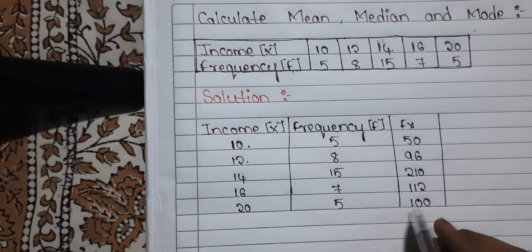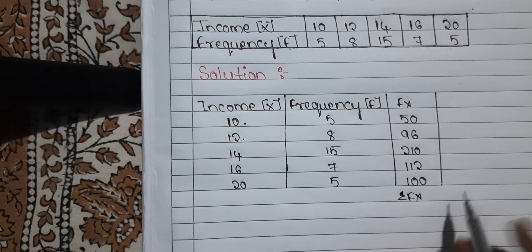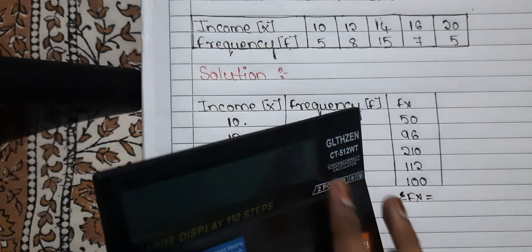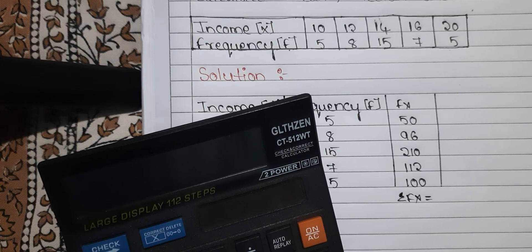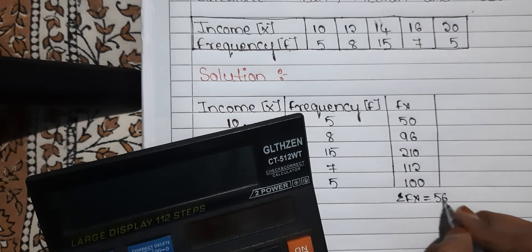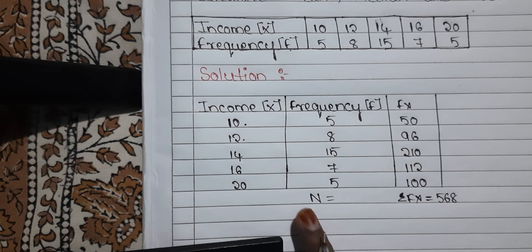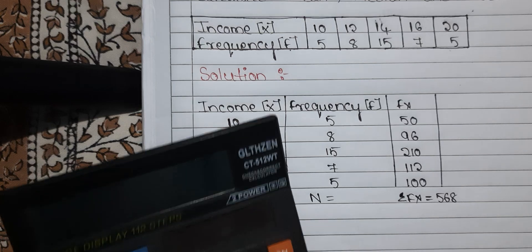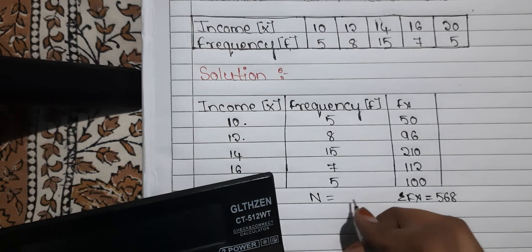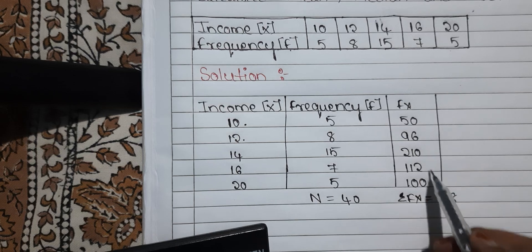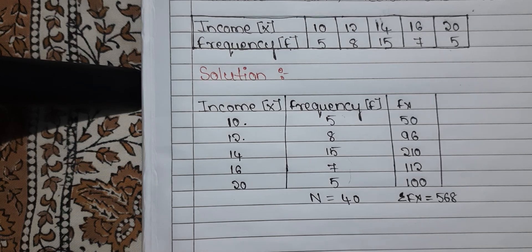After finding FX, we have to find Sigma FX. Sigma FX is nothing but when you add all the values of FX, you will get Sigma FX. Adding all values: 50 + 96 + 210 + 112 + 100 = 568. Then we also need N. When we add all the frequency values — 5 + 8 + 15 + 7 + 5 — we get N, or Sigma F, which is 40.